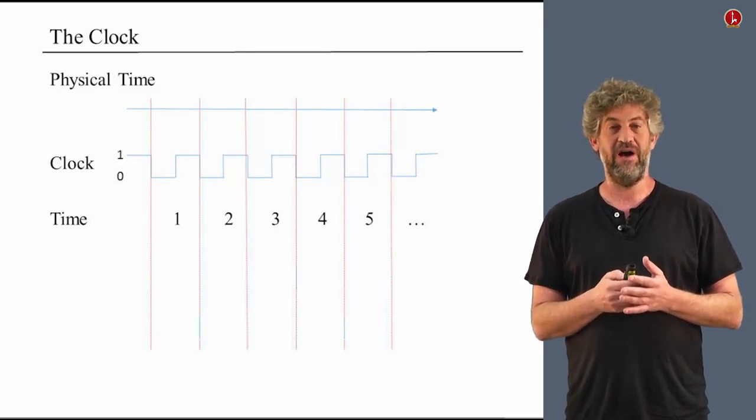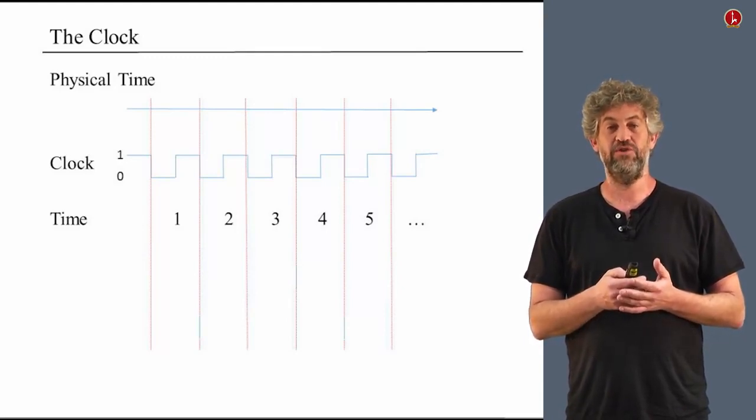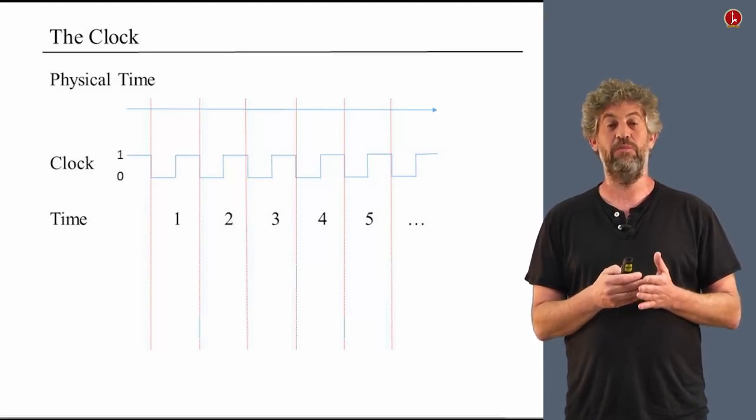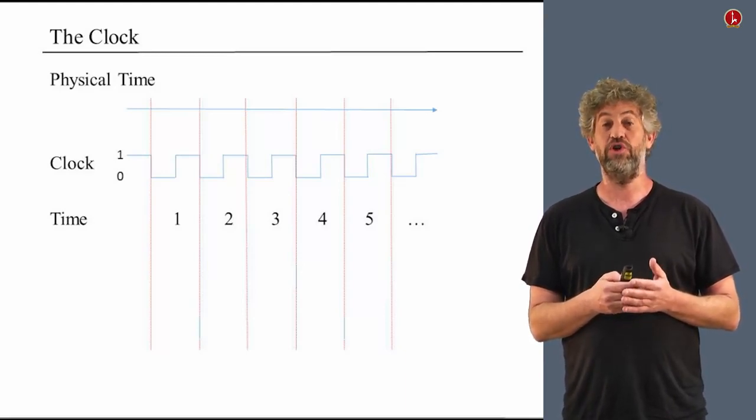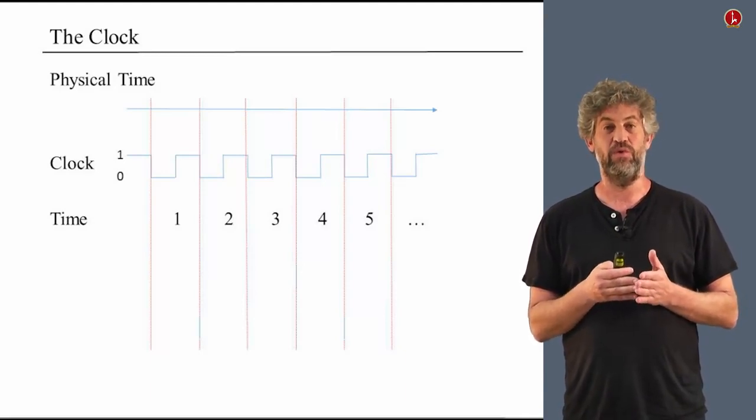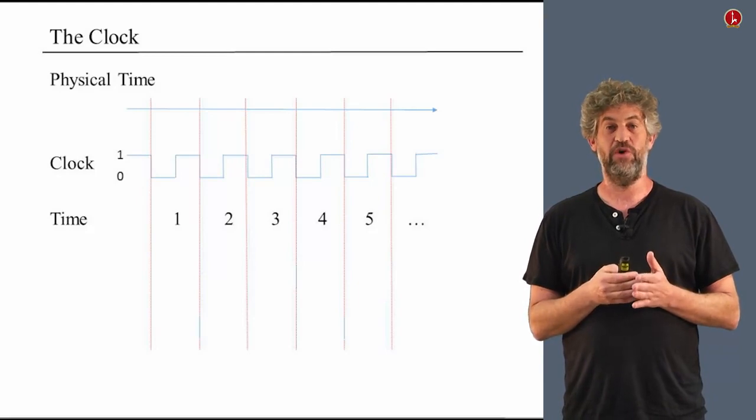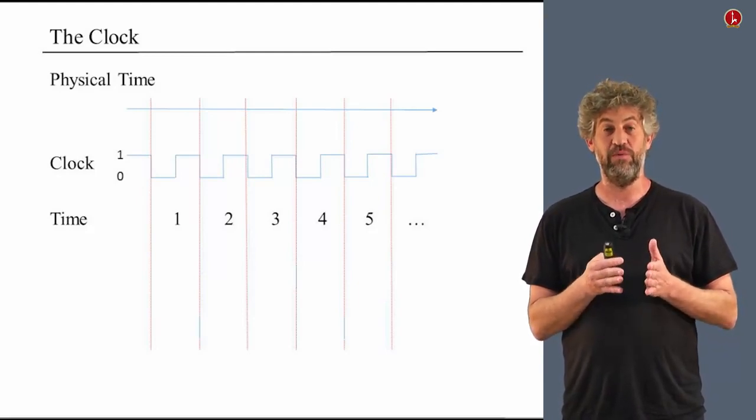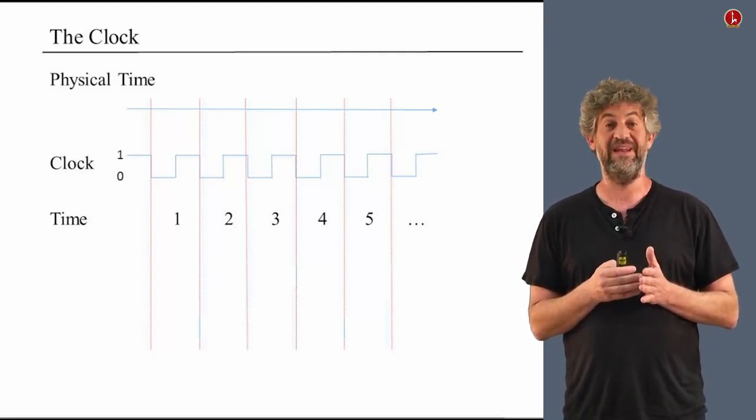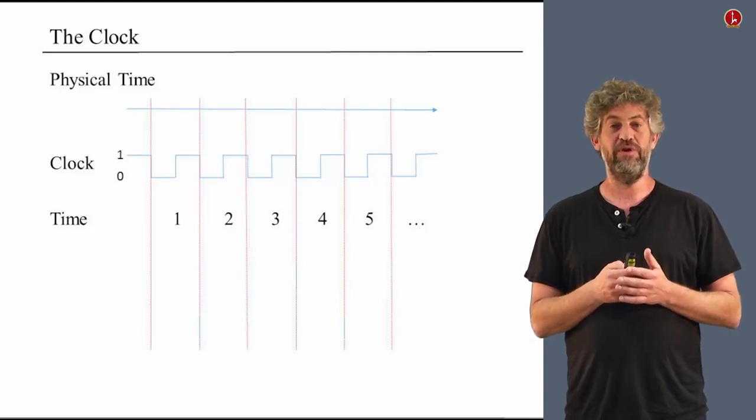And each cycle of the clock, we're going to treat as one digital integer time unit. So once we have this clock, it will basically break up our physical continuous time into a sequence of time equals one, time equals two, time equals three, and so on. Within each time unit, we're going to deal with the time as though it is one individual thing. Nothing changes within a time unit, within an integer time unit.